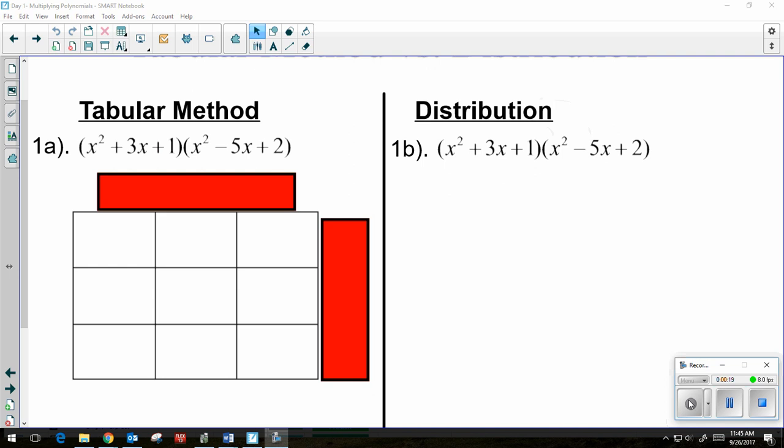So I have two polynomials, a trinomial times a trinomial, x squared plus 3x plus 1 times x squared minus 5x plus 2.